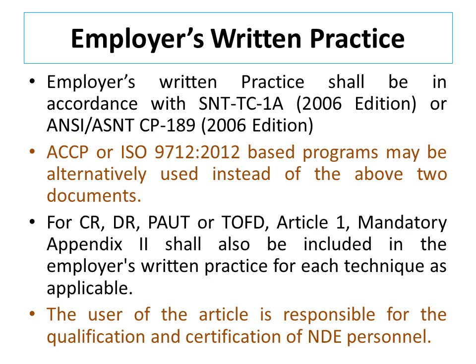An interesting point to note is that Article 1 mentions the specific year of publications to be followed. The 2006 edition of SNT-TC-1A is to be followed — this is not the latest edition of SNT-TC-1A, and the same applies to the other documents. Please note that the year of the edition of SNT-TC-1A or ANSI-SNT-CP-189 specified is not the latest edition. Remember, the latest edition is not to be followed; the edition to be followed is what is mentioned in this document, which is the 2006 edition.